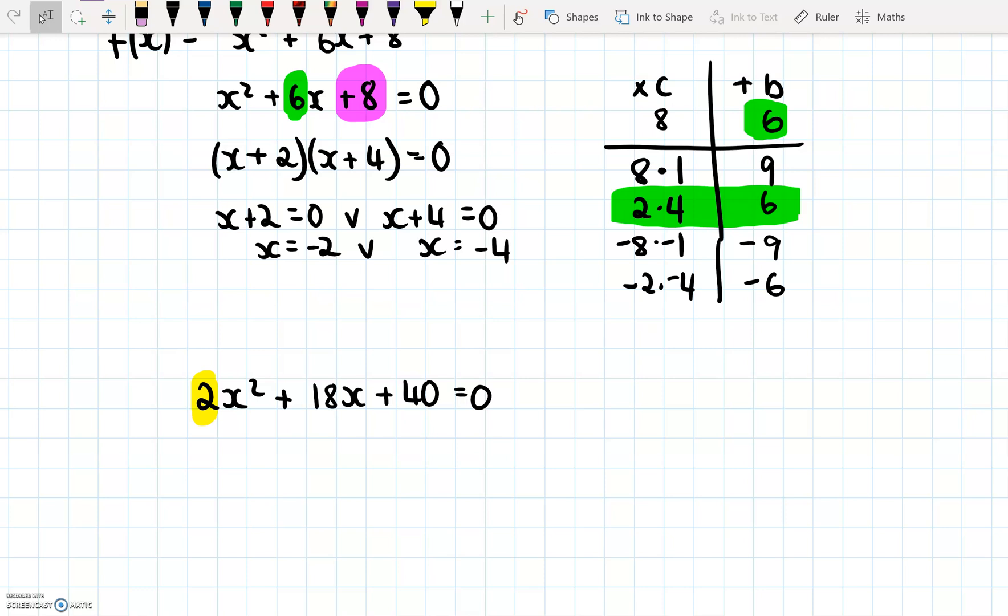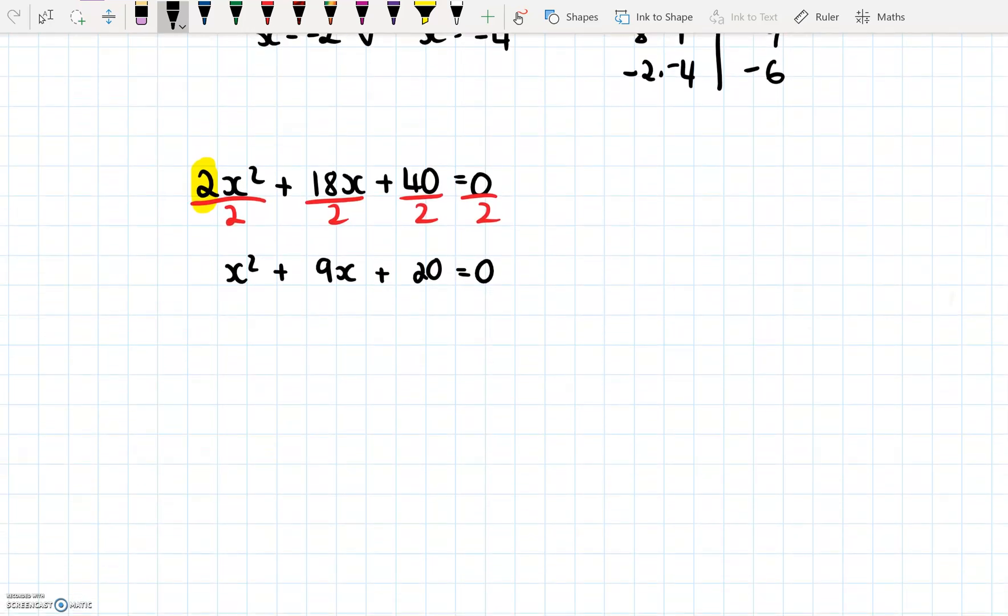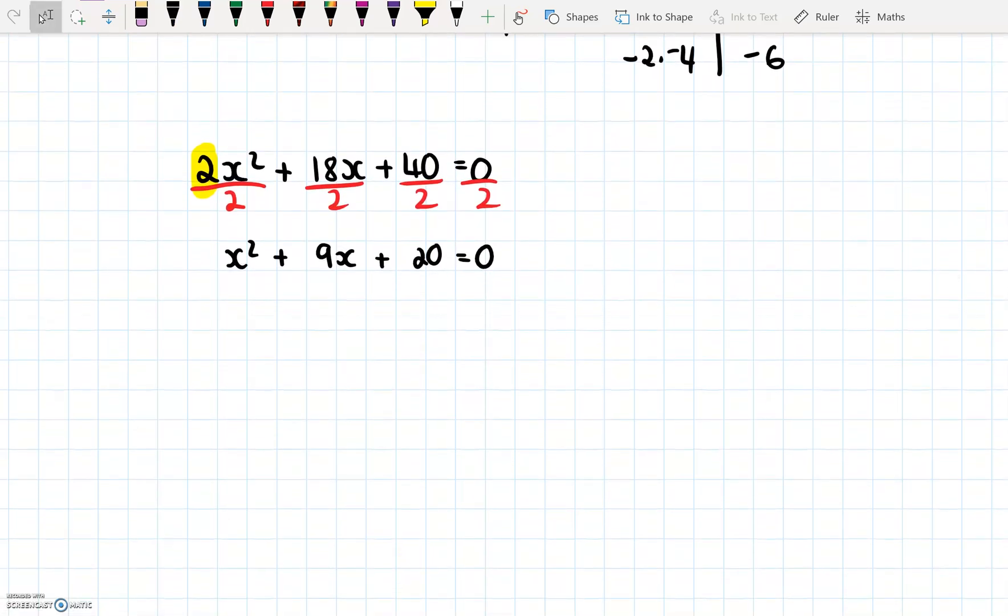So what we do in this case is actually we look at all our terms, and all we do is we divide them by 2. So if you divide each of our terms by 2, and that includes what's on the other side, which is 0. 0 divided by 2 is still 0. So then what we get now is x² + 9x + 20 = 0. And now you can think about the product sum rule, because now we have a is 1.